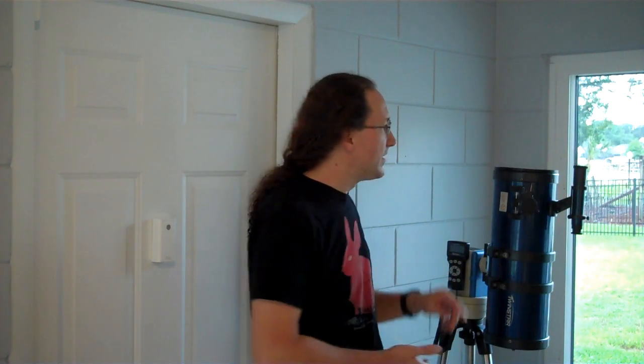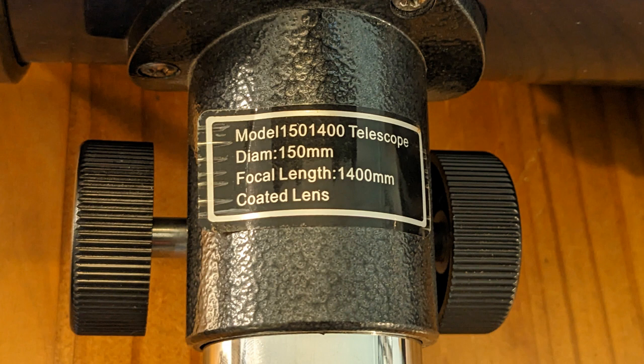This is a TwinStar telescope optical tube assembly. It is six inch aperture and the focal length is 1,400 millimeters or 1.4 meters.